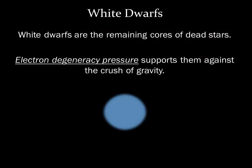A white dwarf is essentially the exposed core of a star that has died and has shed its outer layers in a planetary nebula. It's quite hot when it first forms, but it slowly cools with time. Electron degeneracy pressure supports the white dwarf against the crush of gravity. This is the type of pressure that arises when subatomic particles are packed as closely as the laws of quantum mechanics allow. In a white dwarf, the degeneracy pressure arises from closely packed electrons, so we call it electron degeneracy pressure.